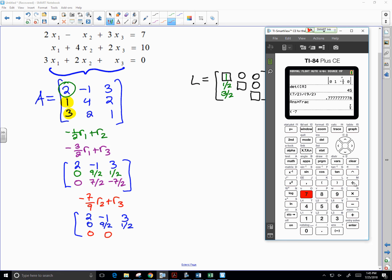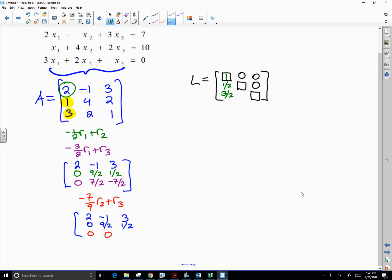So negative 7 ninths times one half is negative 7 eighteenths. I'm going to multiply that by 9, so minus 63 eighteenths. Negative 7 eighteenths minus 63 eighteenths is negative 70 eighteenths. So negative 70 eighteenths is negative 35 ninths if I'm not too much mistaken.